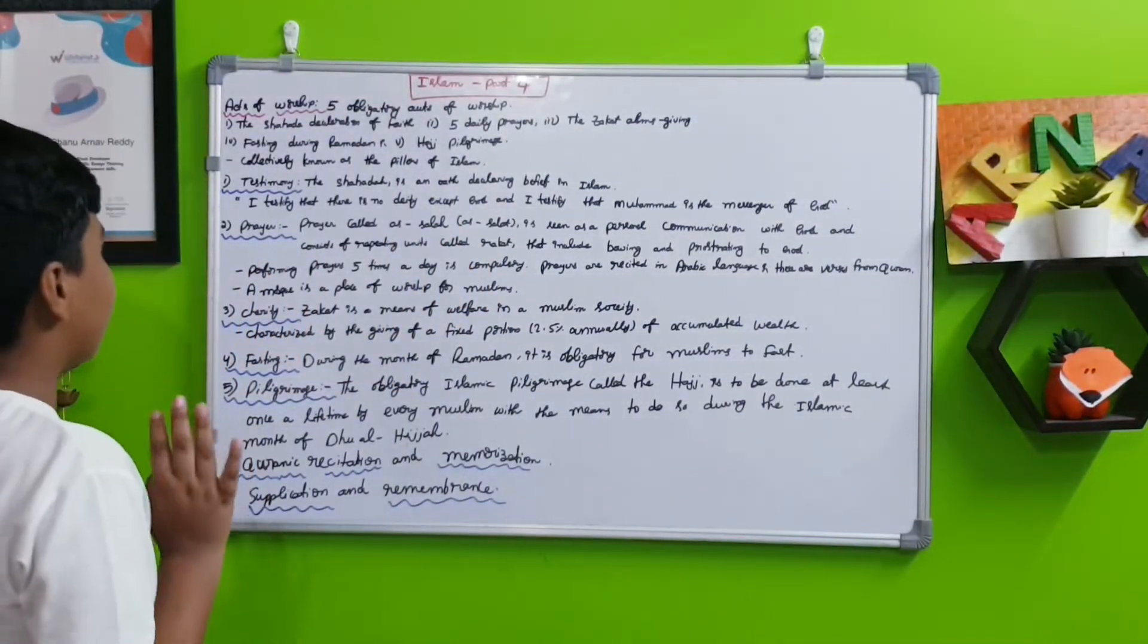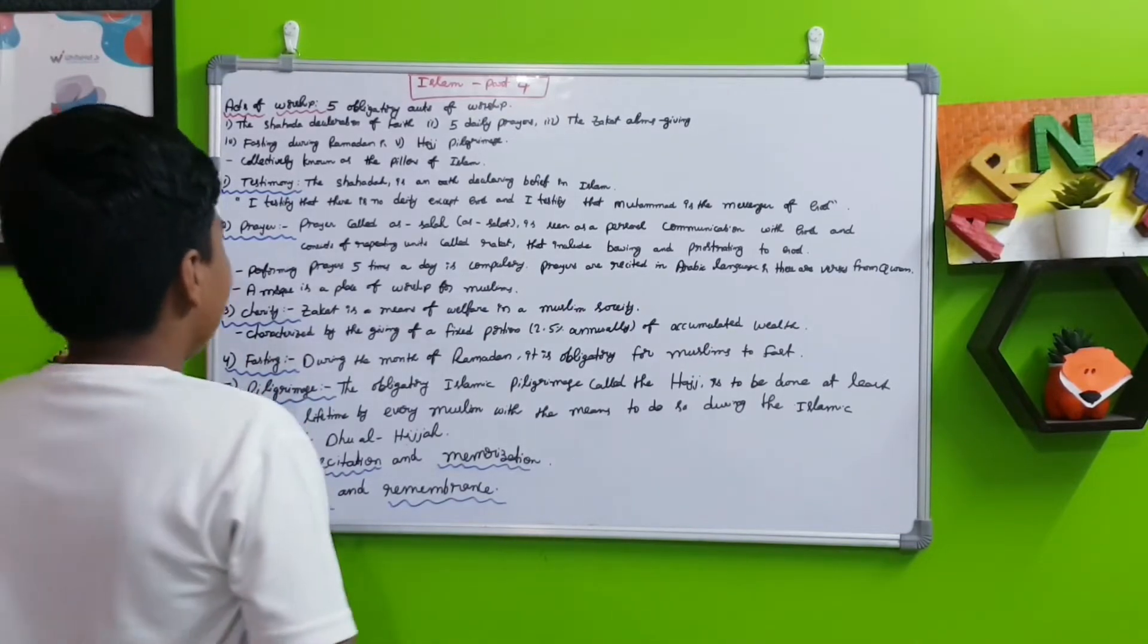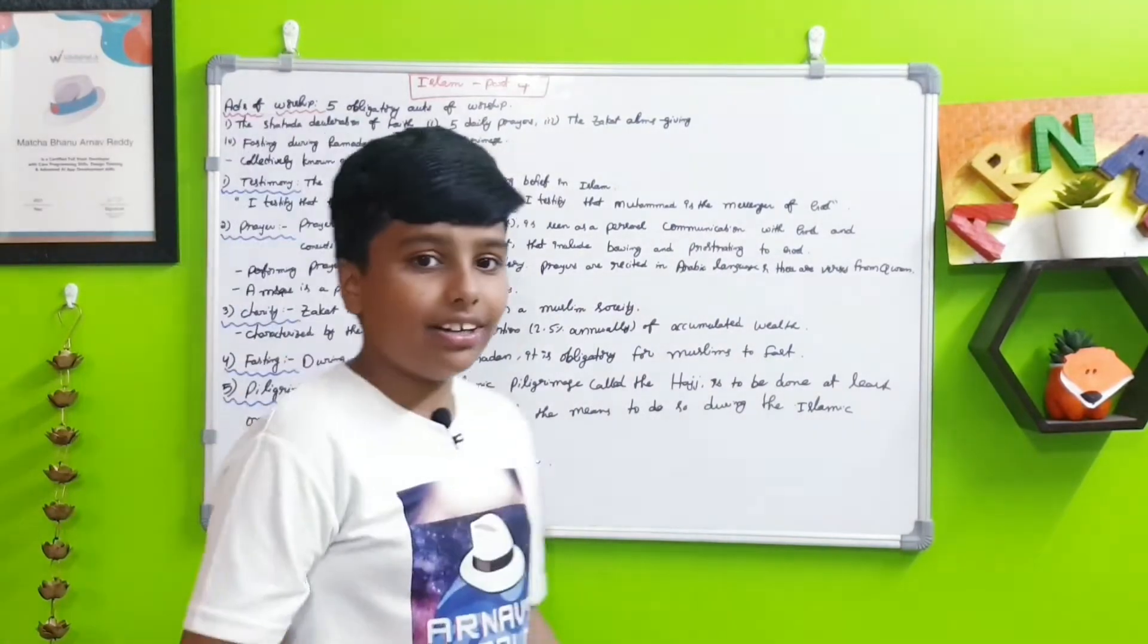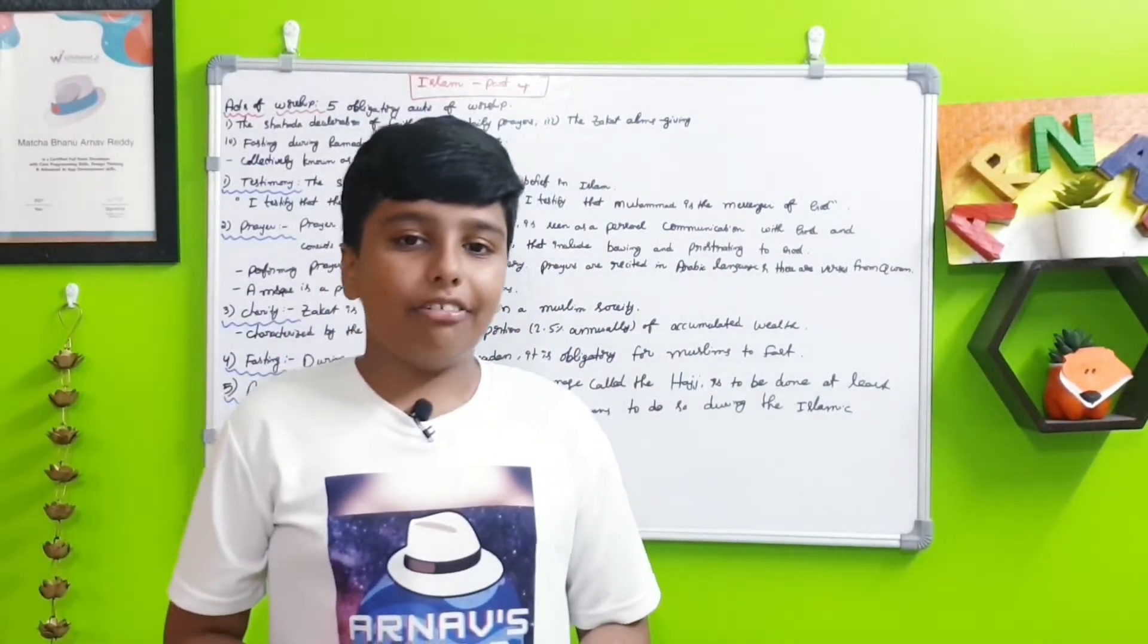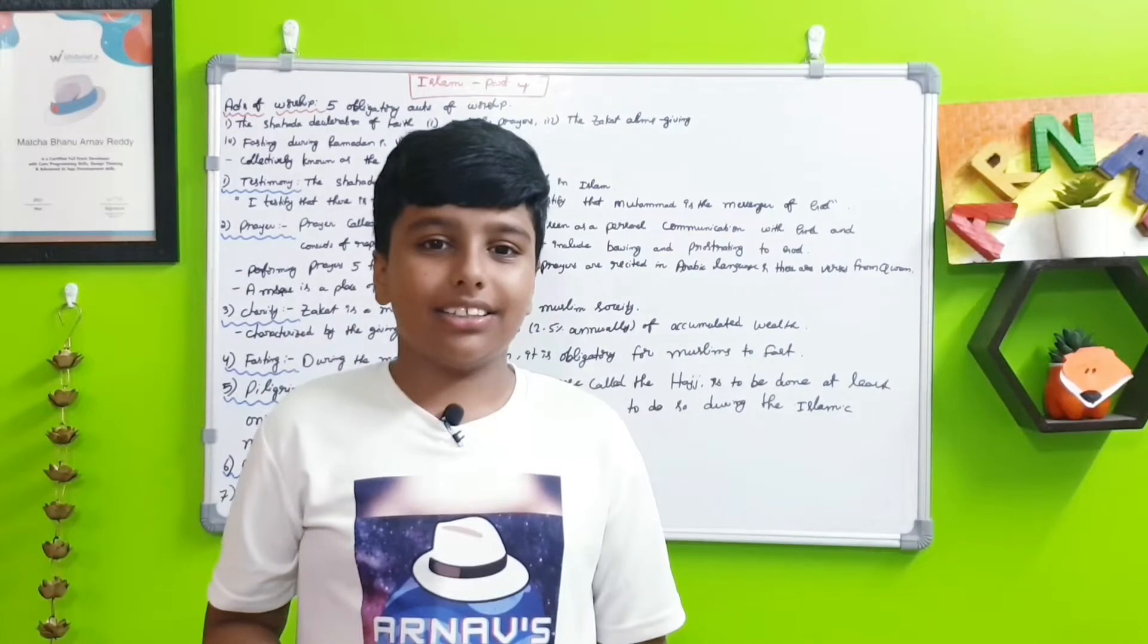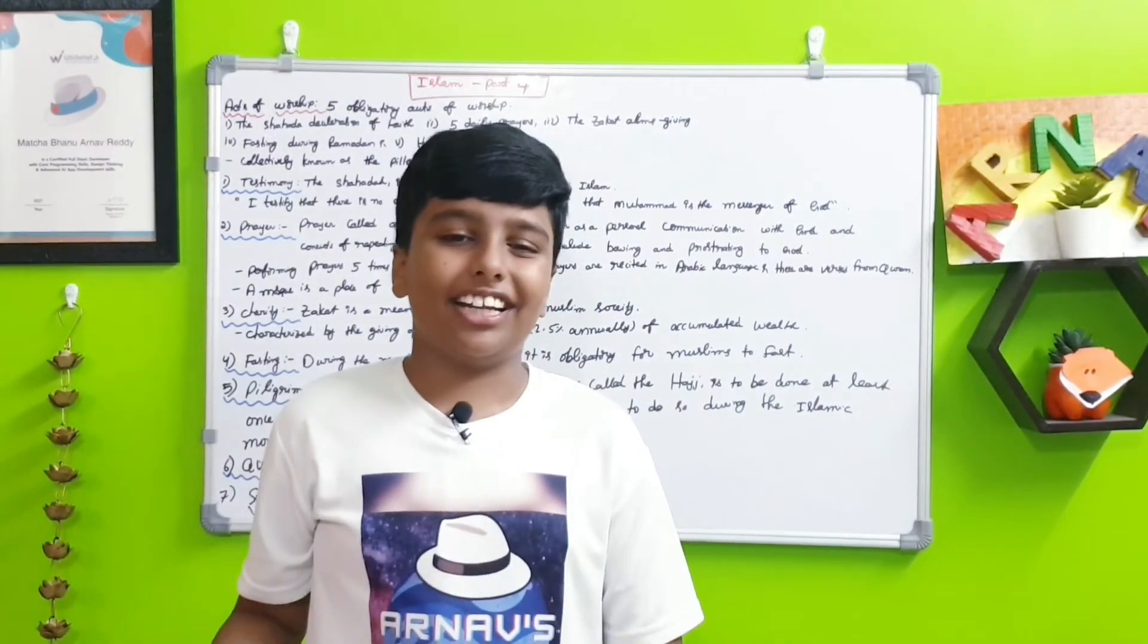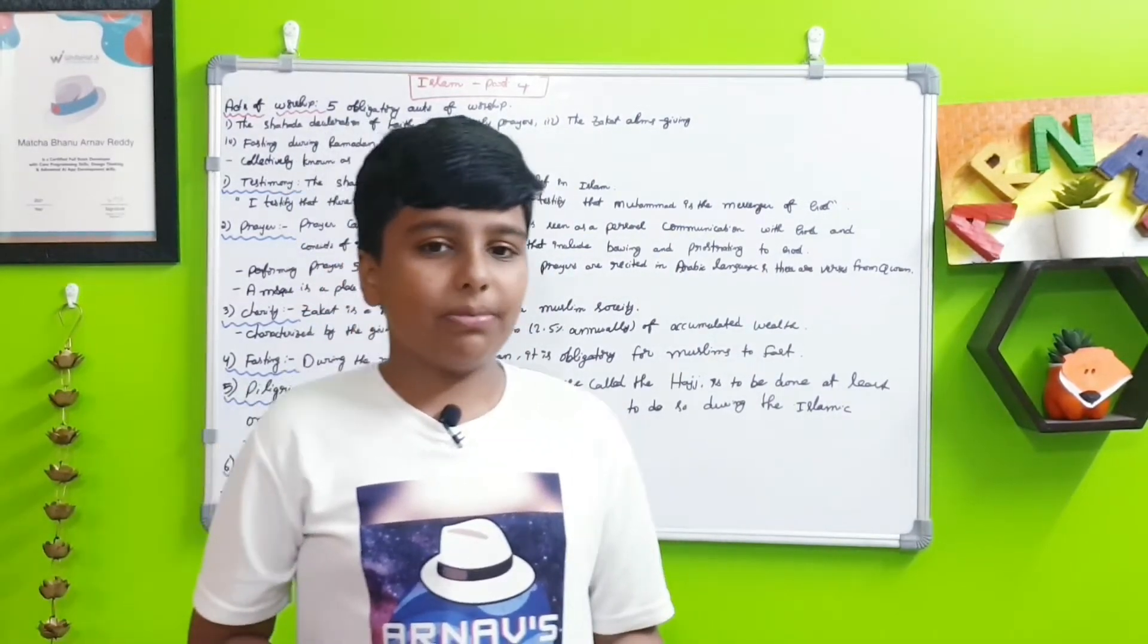The fourth one is fasting. During the month of Ramadan, it is obligatory for Muslims to fast, but they need to eat sometimes. So they only fast for daytime hours. For example, if it is 9 PM and you want to eat, you can eat at that time because it is already dark. But if it is 1 PM, you still need to fast.